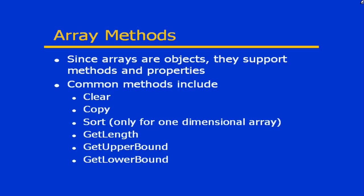This is by no means a comprehensive list of all the methods and properties available for arrays, but this will give you a basic idea of what arrays support. Some of the more common methods include Clear, if you wanted to clear out the contents of the array and recapture memory; Copy, if you wanted to create a copy of the array into another array; and Sort, if you wanted to sort the elements. One note about Sort: it is only available for one-dimensional arrays or the first dimension of a multidimensional array, so be aware there are some limitations.